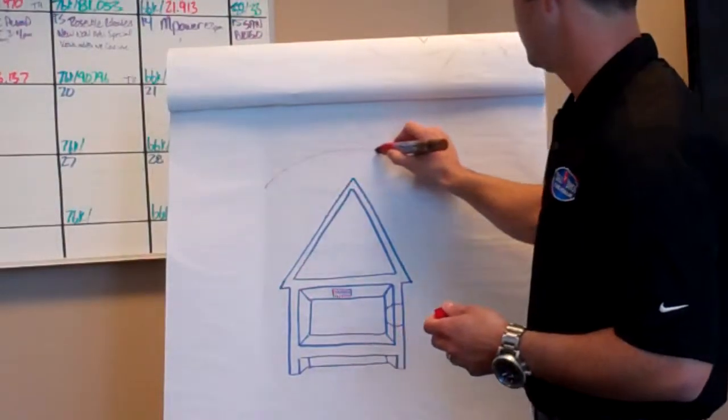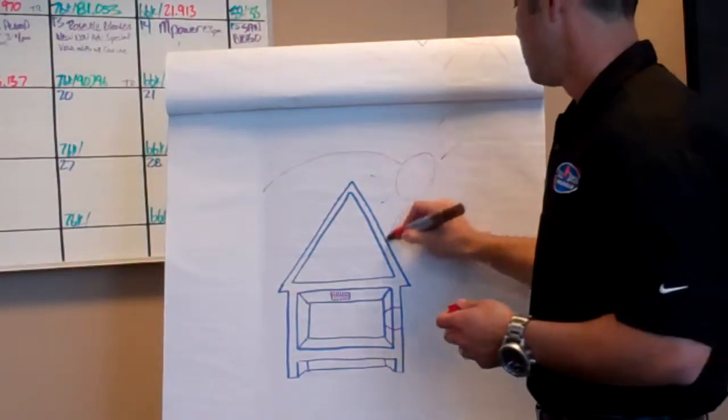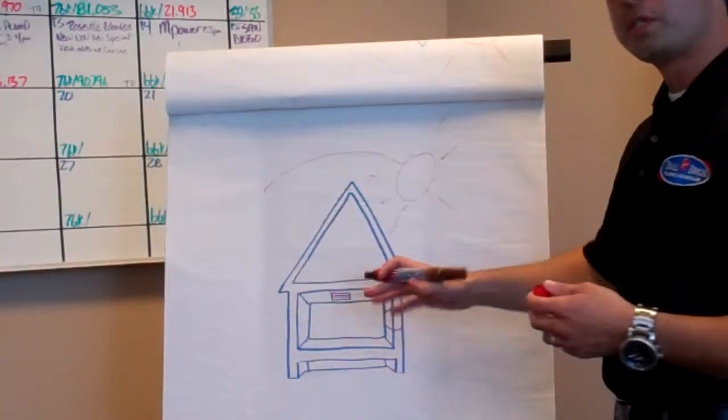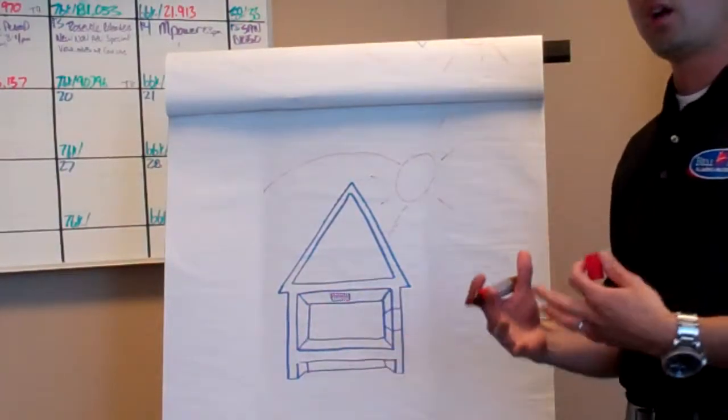So, the sun rises, cooks your house all day long, especially with the summer coming up. So, what happens? The roofing material gets hot, the attic gets hot, the attic goes all the way down. Your whole house gets nice and hot, right?